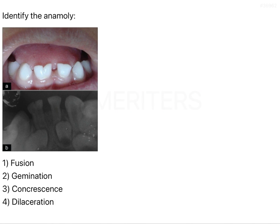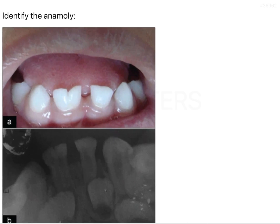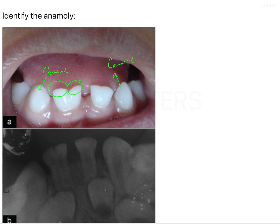The question here is to identify the anomaly. We can see there is a clinical picture and a radiographic picture. If you see here, this seems to be a deciduous canine, and this also seems to be a deciduous canine. Between these there have to be four teeth: lateral incisor, central incisor, left central incisor, and lateral incisor. From the clinical picture we can presume there is a fusion of the central incisor and the lateral incisor.